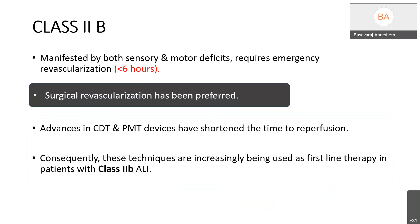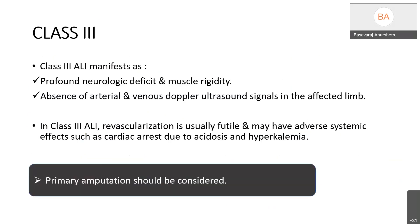Class 2B patients, manifested by sensory and motor deficits, require emergency revascularization within less than 6 hours. Surgical revascularization has traditionally been preferred; however, recent advances in catheter-directed and pharmacomechanical thrombolysis have shortened reperfusion time, and in many centers this is now used as first-line therapy. Class 3 patients present with neurological deficit, muscle rigidity, and absence of arterial and venous Doppler signals. Primary amputation should be considered first-line, as revascularization is usually futile and may cause adverse systemic effects such as cardiac arrest due to acidosis and hyperkalemia.